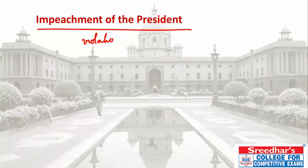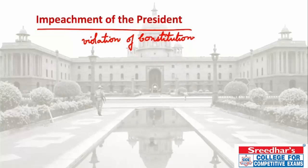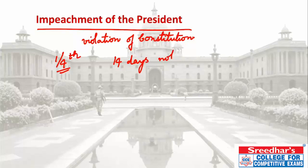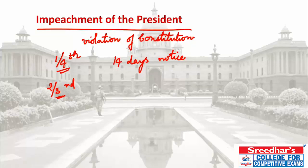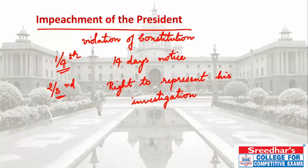Regarding impeachment of the President: impeachment occurs when the President violates the terms of the Constitution. The impeachment charges must first be raised by one-fourth of the members of the house. A 14-day prior notice must be given to the President before the charges are introduced in the house. After that, two-thirds majority is required, and the bill is sent to the other house. The President has the right to appear and represent himself in the investigation.